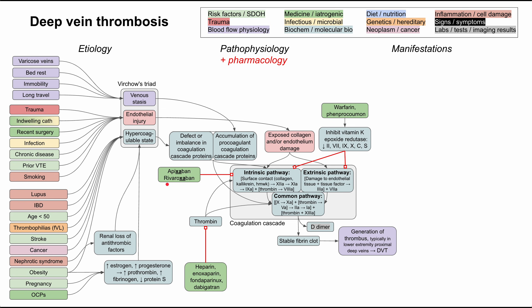There are also newer oral anticoagulants that directly block factor Xa — apixaban and rivaroxaban. Factor Xa is in the intrinsic pathway, so blocking it blocks that pathway. These drugs are easy to remember because apixaban and rivaroxaban both contain the letters 'Xa.' In more acute cases, alteplase — also called TPA, or tissue plasminogen activator — is used. TPA converts plasminogen into plasmin, which directly breaks down a clot. However, it can cause bleeding, so using alteplase involves a careful risk-benefit analysis.